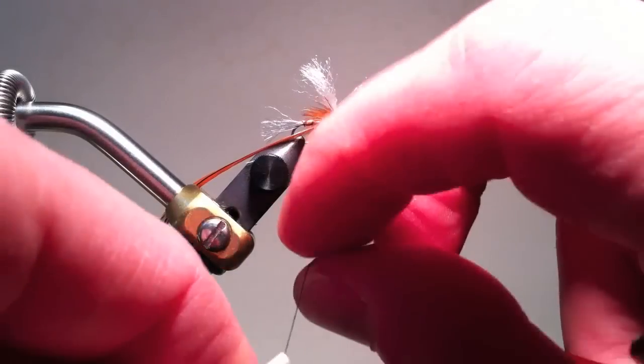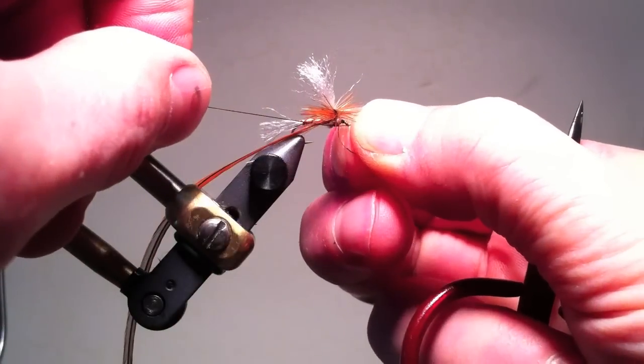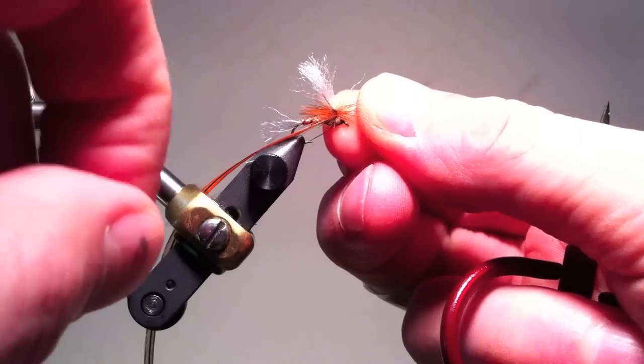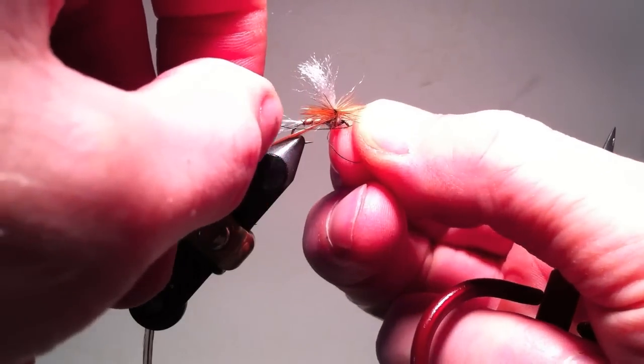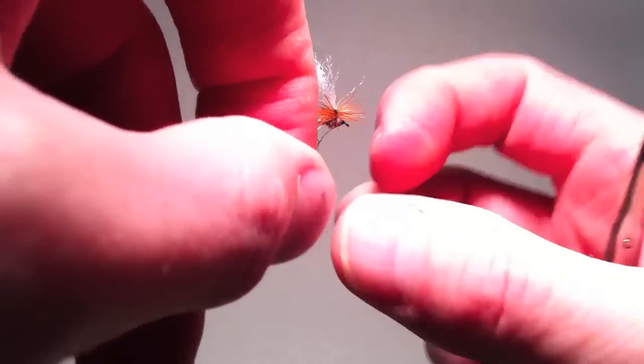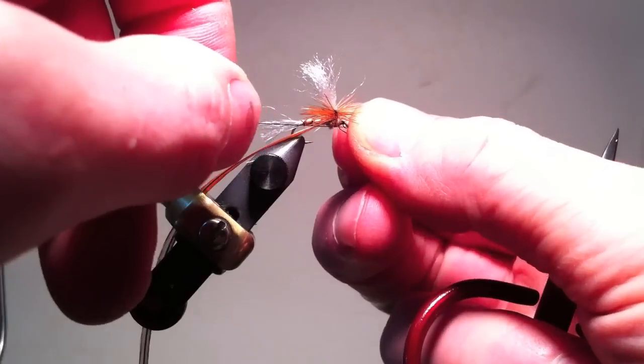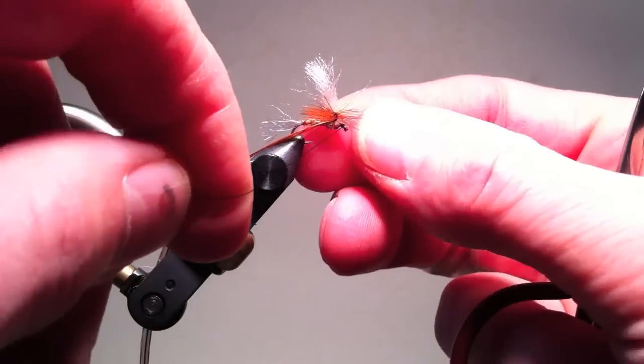I tie the hackle off at the post and then tie the thread off at the eye of the hook. Again, usually I use a whip finish, but I'm going to use half hitches here just for demonstration purposes, but either is fine.